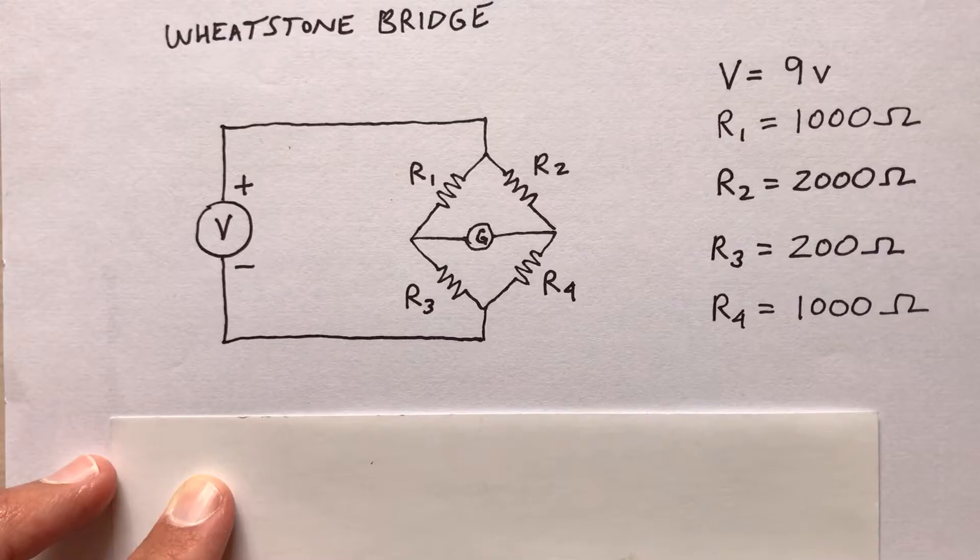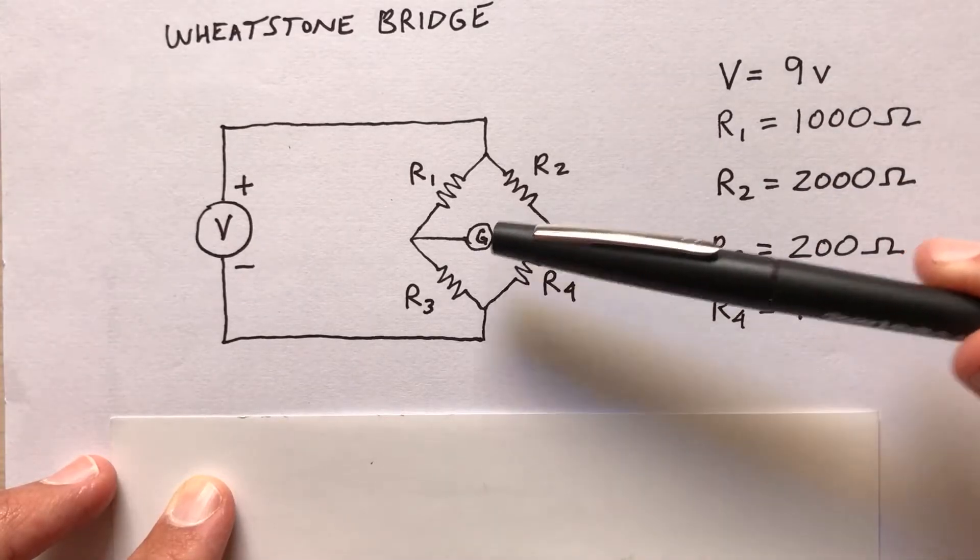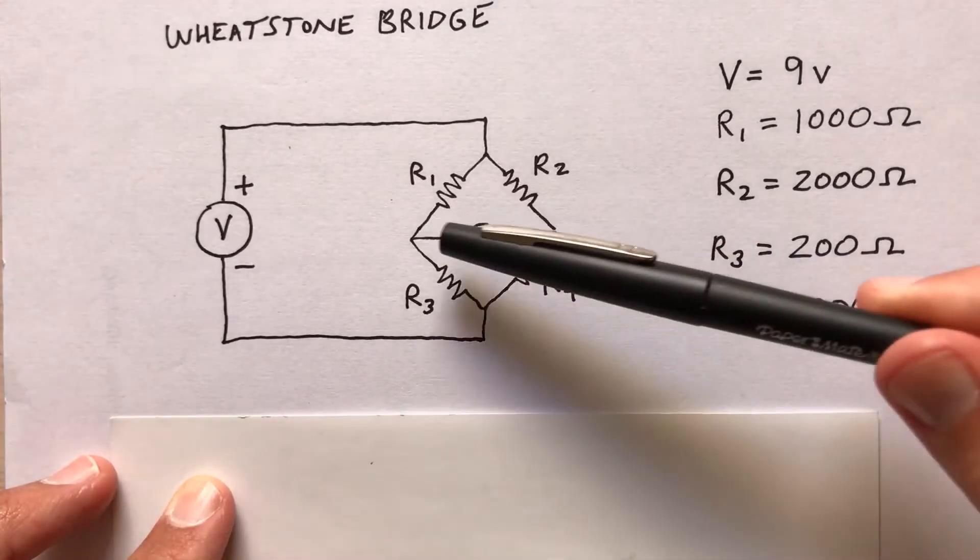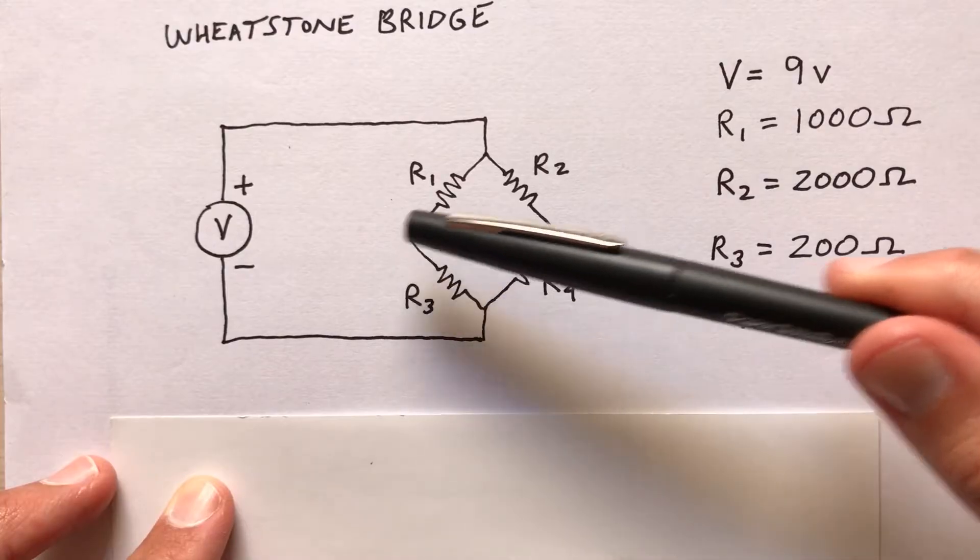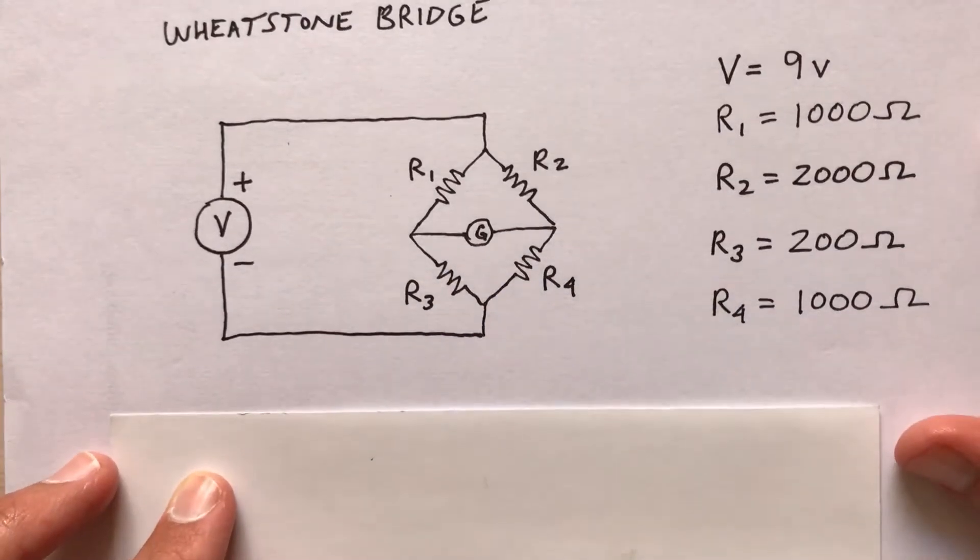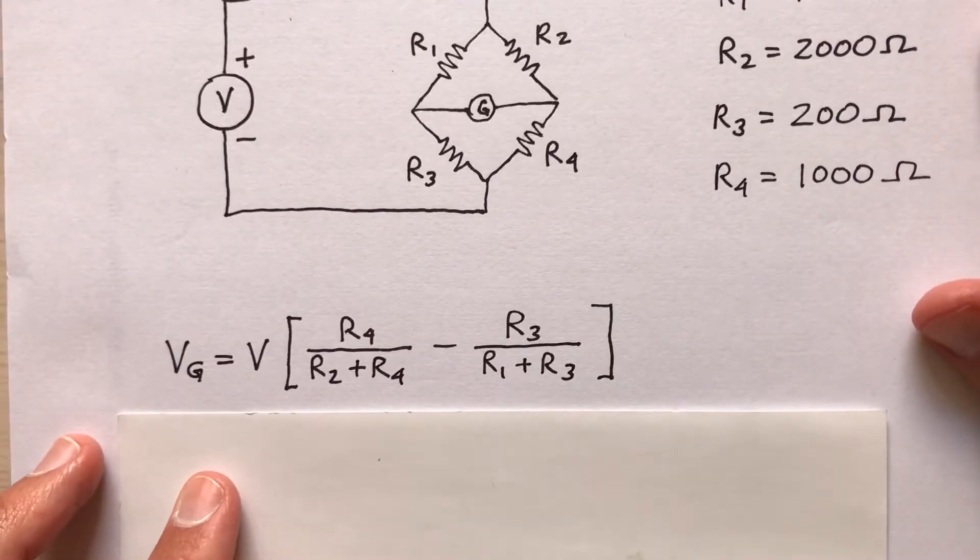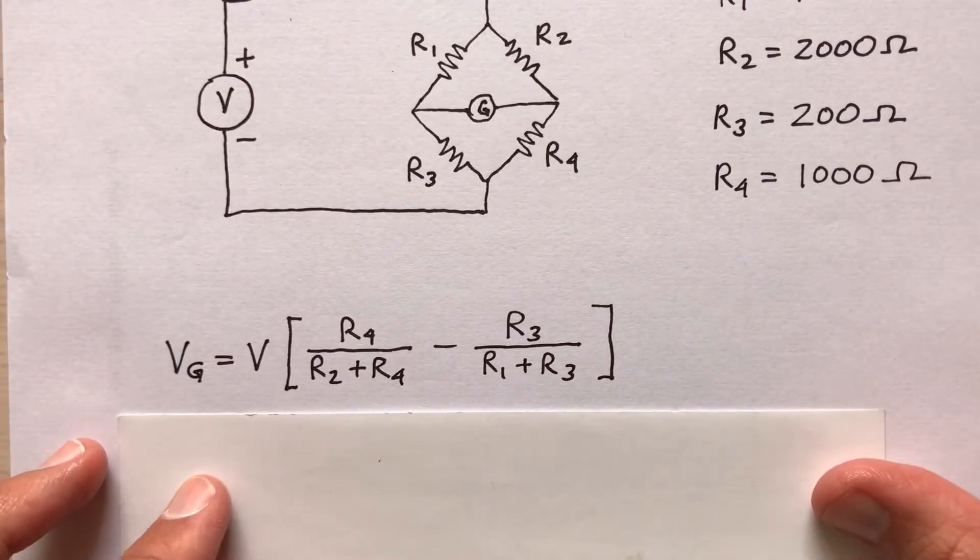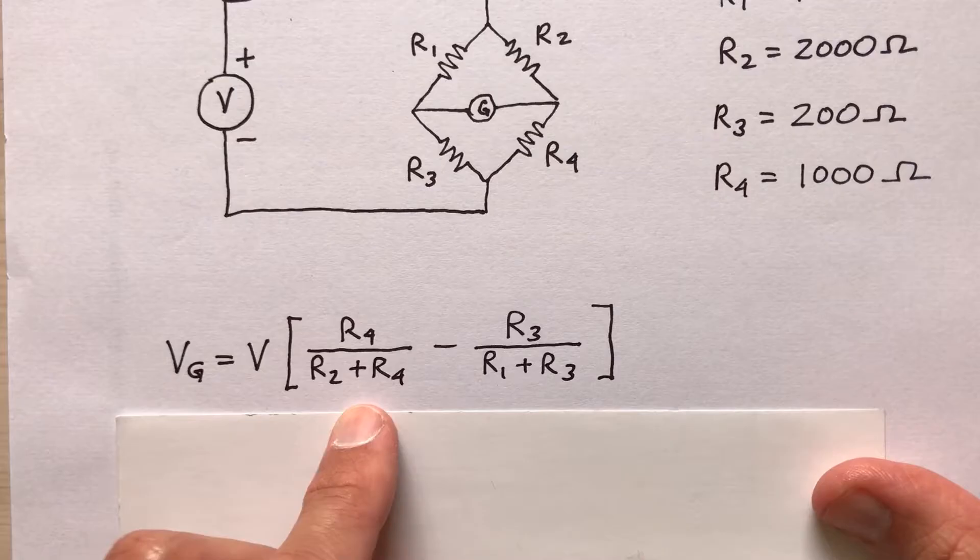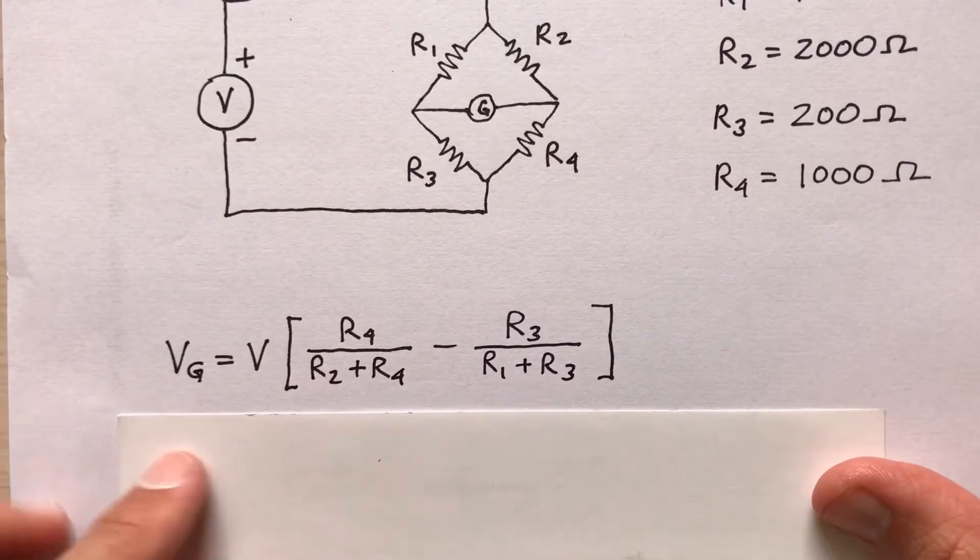I want to calculate the voltage across G, G for galvanometer. So I'm going to calculate the voltage between these two nodes with a formula: V times R sub four over R sub two plus R sub four minus R sub three over R sub one plus R sub three.